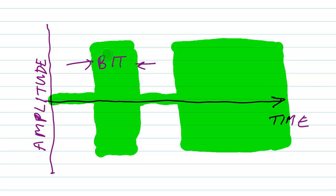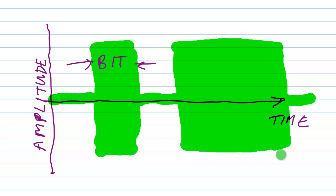When you look very carefully at the amplitude versus time envelope of a signal like this, you should see slightly rounded corners — right here, here, here, here, here, here, here, and here. These corners shouldn't be perfectly square.